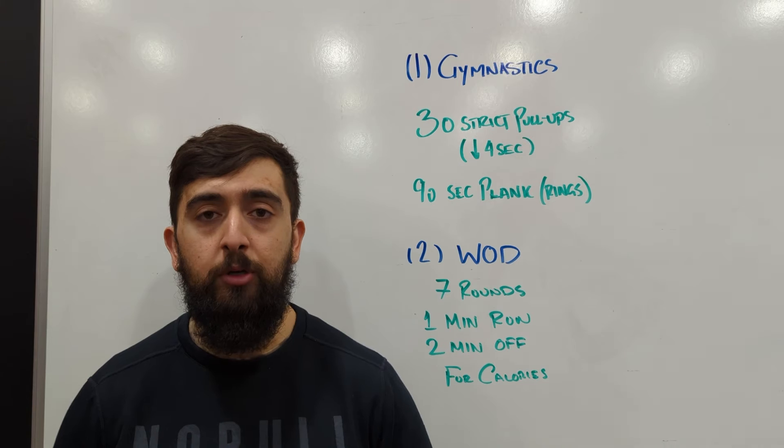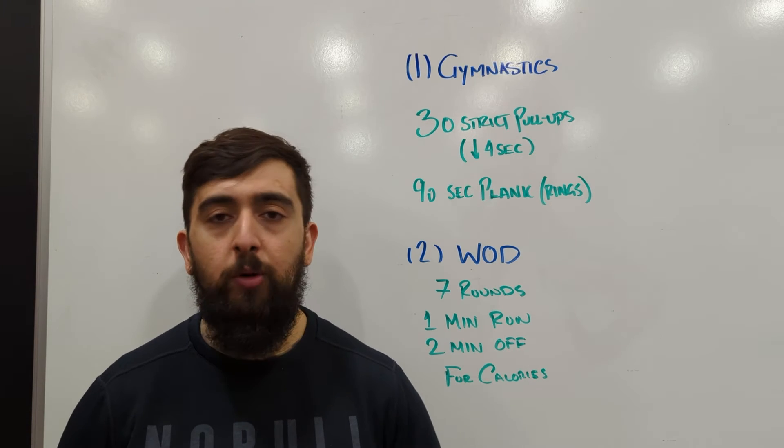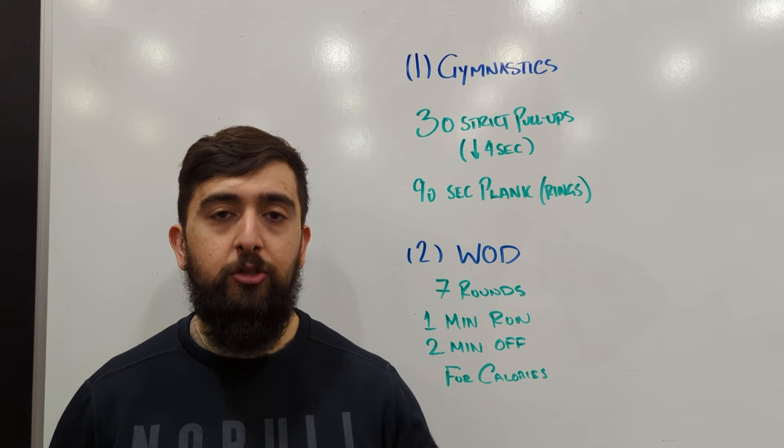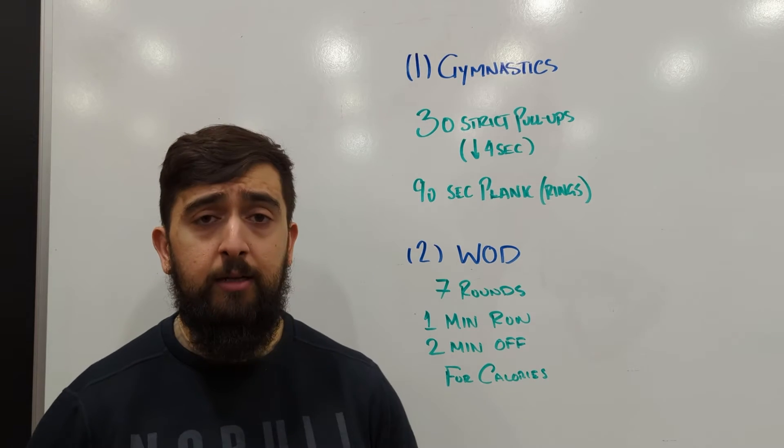So for example if you want to do five of those strict pull-ups and then let's say 20 seconds of the plank or if you want to just do 30 and then 90 seconds, up to you.